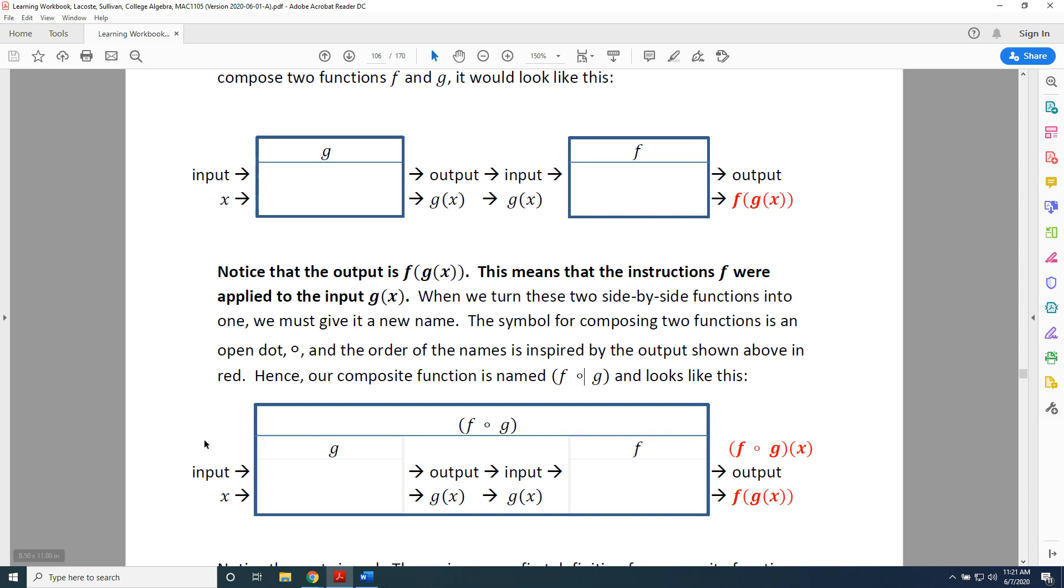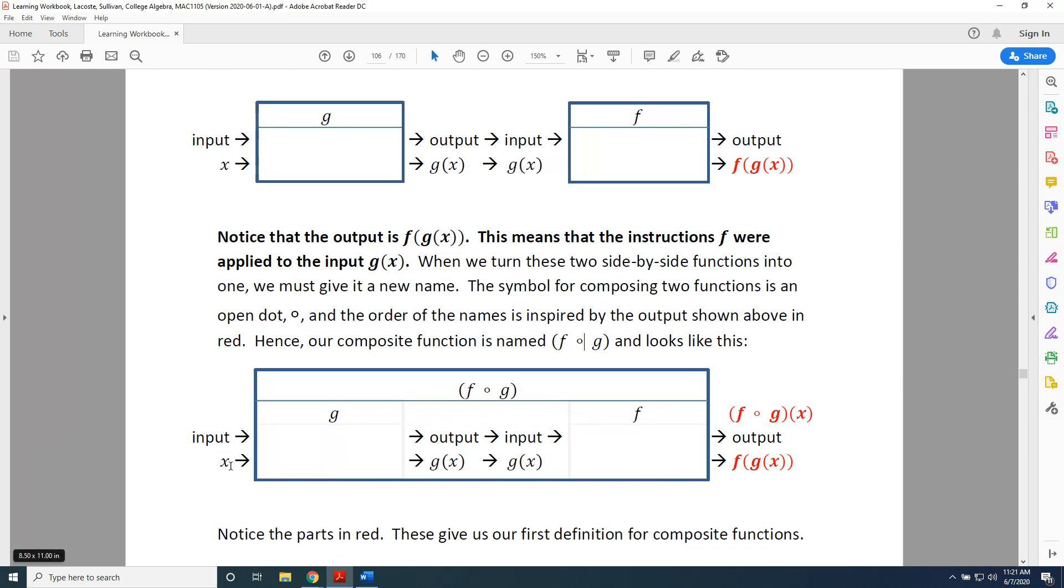So there are two ways that we can describe the journey from input to output. The first way is to say that an input x goes into a machine named f composed with g, and therefore what comes out is f composed with g of x.